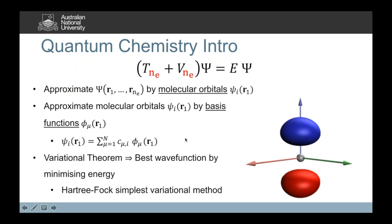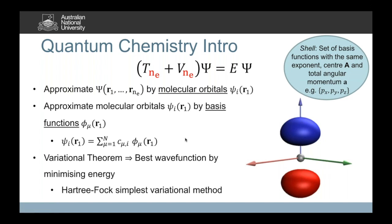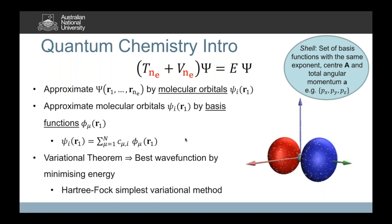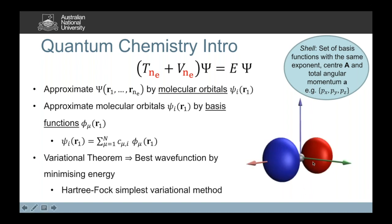For instance, you can view different p basis functions — the px, py, and pz basis functions, shown here on the right. An important bit of terminology: a shell is a set of basis functions with the same exponent, center, and total angular momentum. So those three basis functions — px, py, and pz — would be a p-shell. We then invoke the variational theorem, which gives us the best wave function possible within our approximation by minimizing with respect to energy. Hartree-Fock is the traditional simplest variational method.